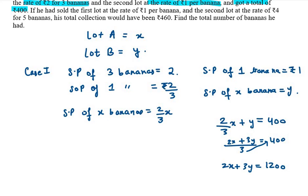Now for the second case: if he had sold the first lot at the rate of ₹1 per banana, the cost would be x. For the second lot, at the rate of ₹4 for 5 bananas, if you talk about 1 banana the cost will be 4/5, so it will be 4/5 y. The total collection is ₹460. This is my second equation.